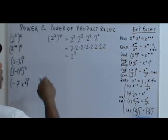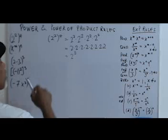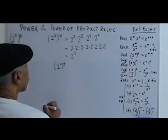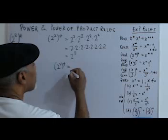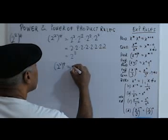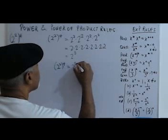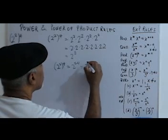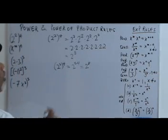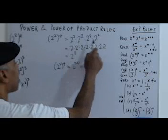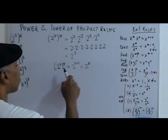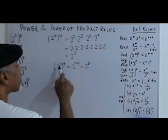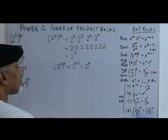Now let's look at the exponents. 2 squared to the 4th, using the power rule, is 2 to the 2 times 4, or 2 to the 8th. The whole point of these exponential rules is to save a lot of writing. So you have an expression like this — immediately you can just multiply the exponents and you get a result.